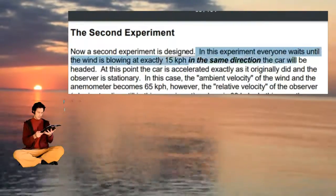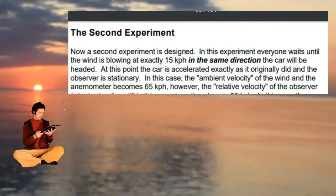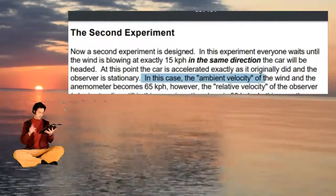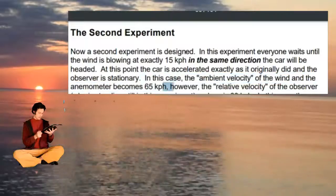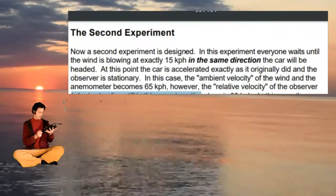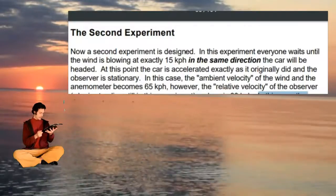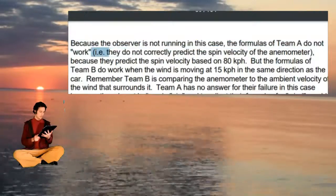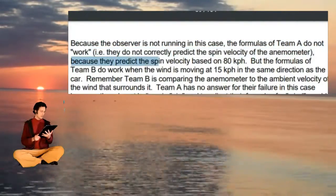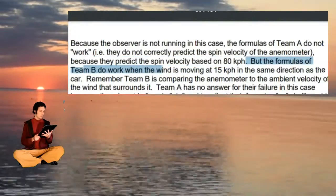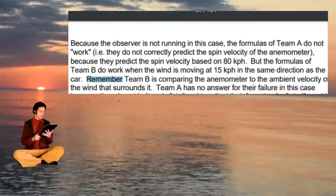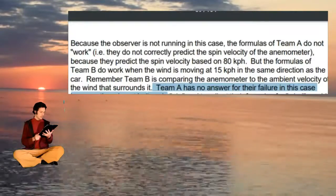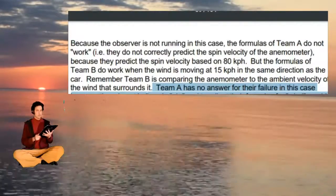The second experiment: everyone waits until the wind is running at exactly 15 kph in the same direction the car will be headed. The car accelerates exactly as it originally did and the observer is stationary. In this case, the ambient velocity of the wind relative to the anemometer becomes 65 kph. However, the relative velocity of the stationary observer and car is 80 kph. The anemometer is actually spinning more slowly than it did in the original experiment. Because the observer is not running in this case, the formulas of Team A do not work — they predict spin velocity based on 80 kph. The formulas of Team B do work when the wind is moving at 15 kph in the same direction as the car, since Team B compares the anemometer to the ambient velocity of the wind surrounding it. Team A has no answer for their failure in this case, because they do not believe in air, and to adjust their formulas for wind would be to admit that air exists.